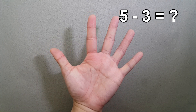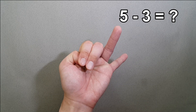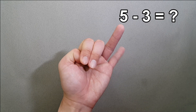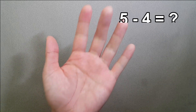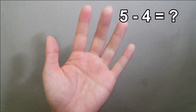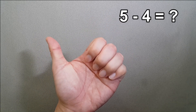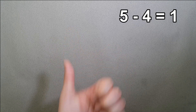What is 5 minus 3? 5 fingers, minus 3, equals 2. Therefore 5 minus 3 is 2. What is 5 minus 4? 5 fingers minus 4, equals 1. Therefore 5 minus 4 is 1.